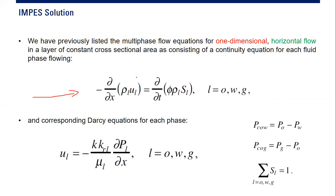We also have corresponding Darcy equations, also for each phase. The Darcy equation gives velocity as absolute permeability multiplied by relative permeability, divided by viscosity of the phase, multiplied by the pressure gradient.